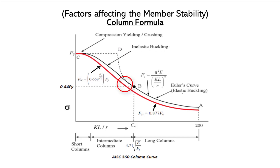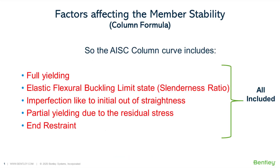The effects on member strength and stability due to initial out-of-straightness, partial yielding due to residual stress, and end restraint conditions are all accounted for in the column curve. Finally, AISC came up with this column curve for determining column strength. You can see the portion where the transition between the buckling limit and full yield limit is smoothened because inelasticity accentuated by residual stress starts developing much earlier in that zone. So now we have the AISC column curve which accounts for all required factors affecting member stability.